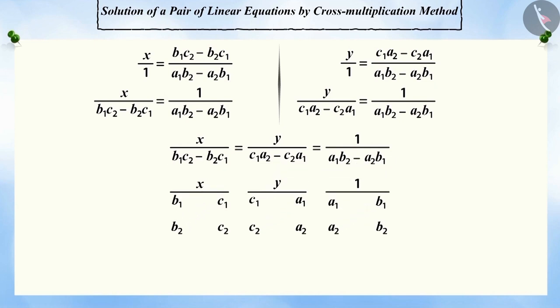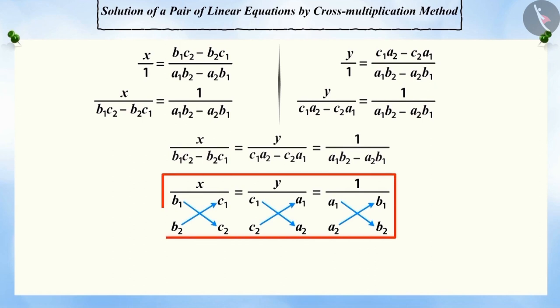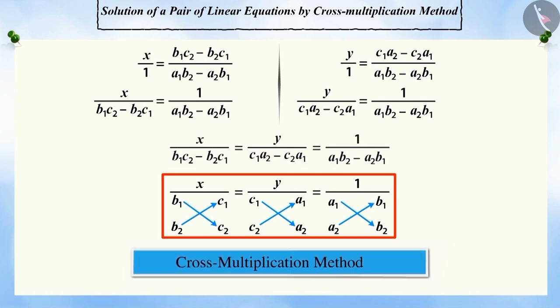This conclusion could be remembered by this method also. The arrows between the two numbers tell us that after multiplying them, we subtract the second product from the first. As this method involves cross-multiplication of numbers, it is called solving the equations by cross-multiplication method.